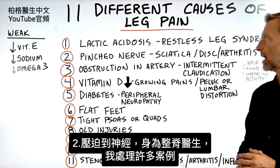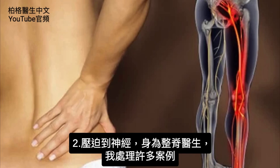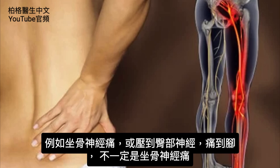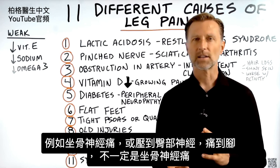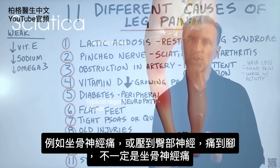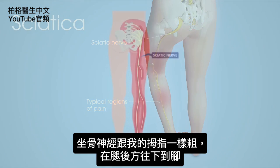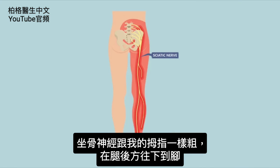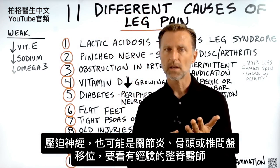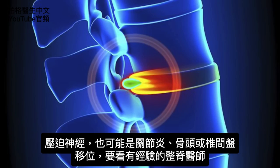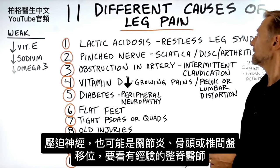Number two: pinched nerve. Being a chiropractor, I've dealt with this a lot. You can have sciatica pain, or a nerve root pinched on one side that goes right down the leg — that's not necessarily sciatica, just a different nerve. The sciatic nerve is very large, about the width of my thumb, and runs down the back of your leg all the way to the foot. Pinching can come from arthritis, a bone out of place, or a disc.